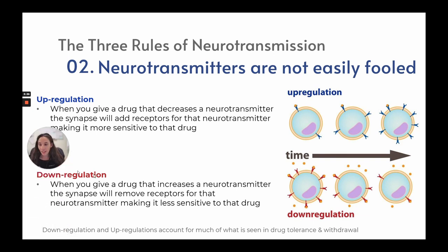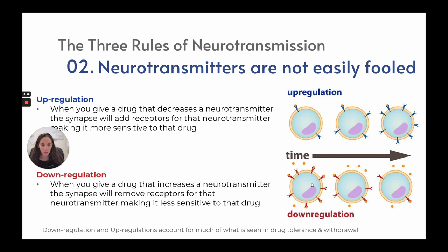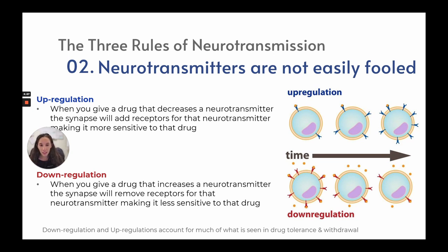Downregulation occurs when you give a drug that increases a neurotransmitter — the synapse will remove receptors, making it less sensitive to that drug. We go from a normal amount of neurotransmitters down to very few, because our body is trying to compensate. This downregulation and upregulation account for much of what we see in drug tolerance and withdrawal.